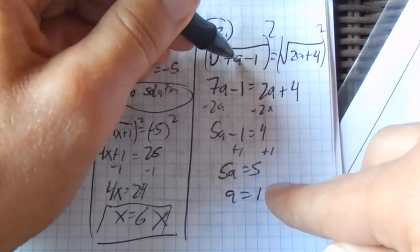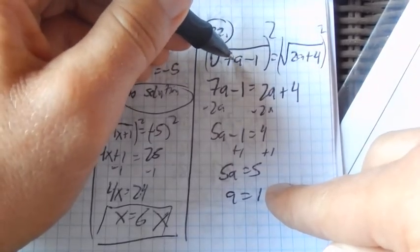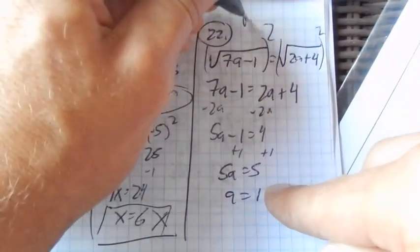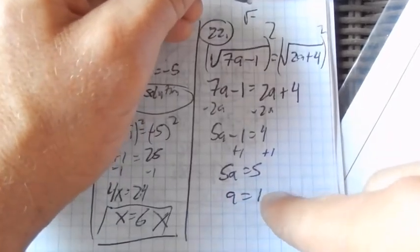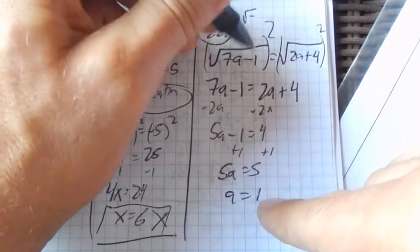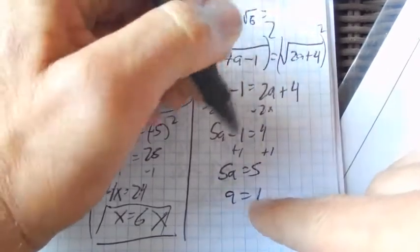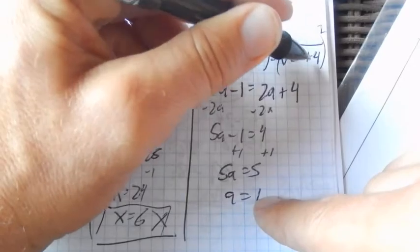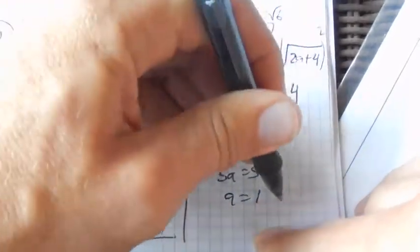Let's check it. 7 times 1 is 6... oh, I'm sorry, 7 times 1 is 7, minus 1 is 6, square root of 6. 2 times 1 is 2, plus 4 is 6, square root of 6. Checks out, it works.